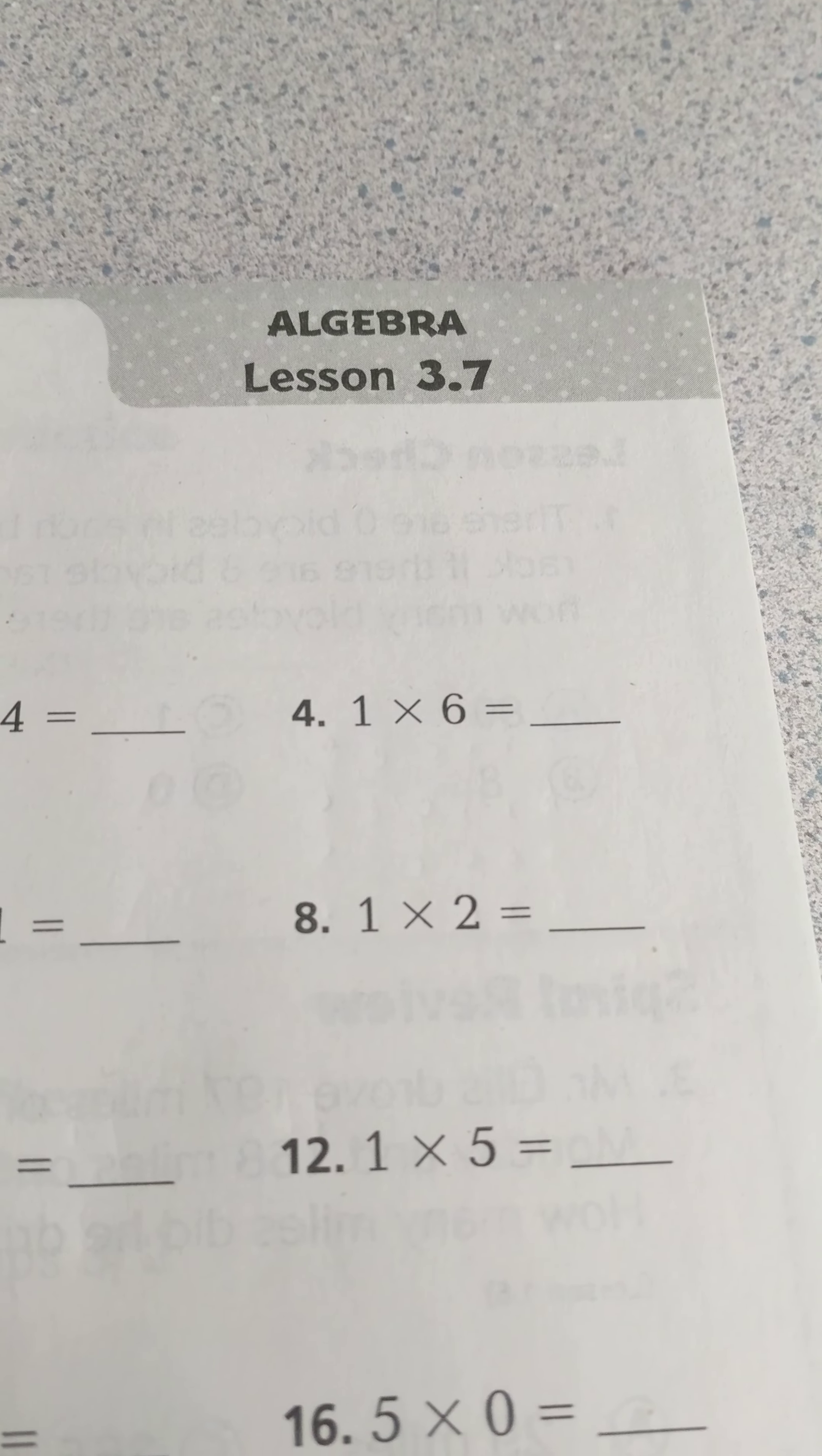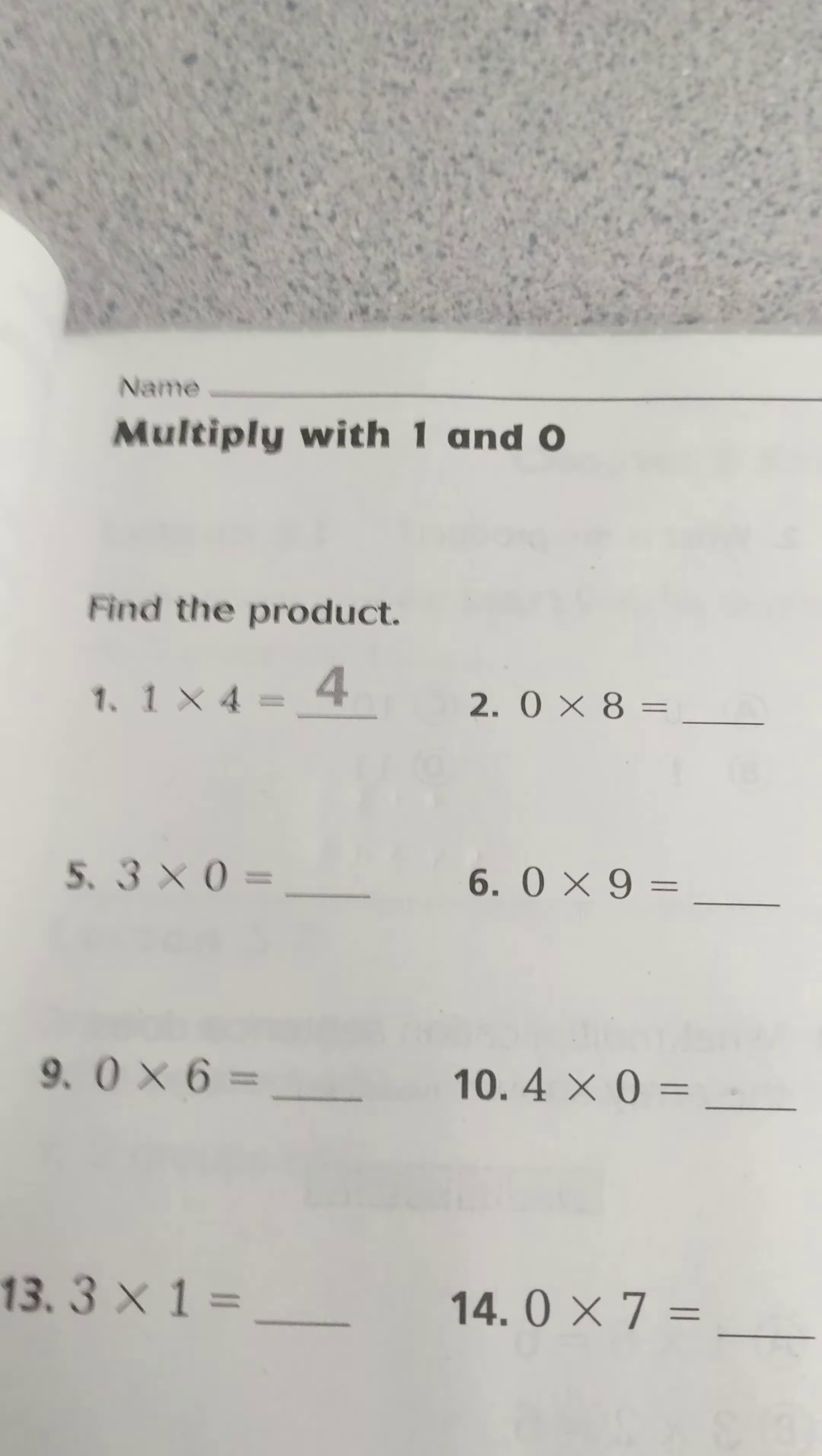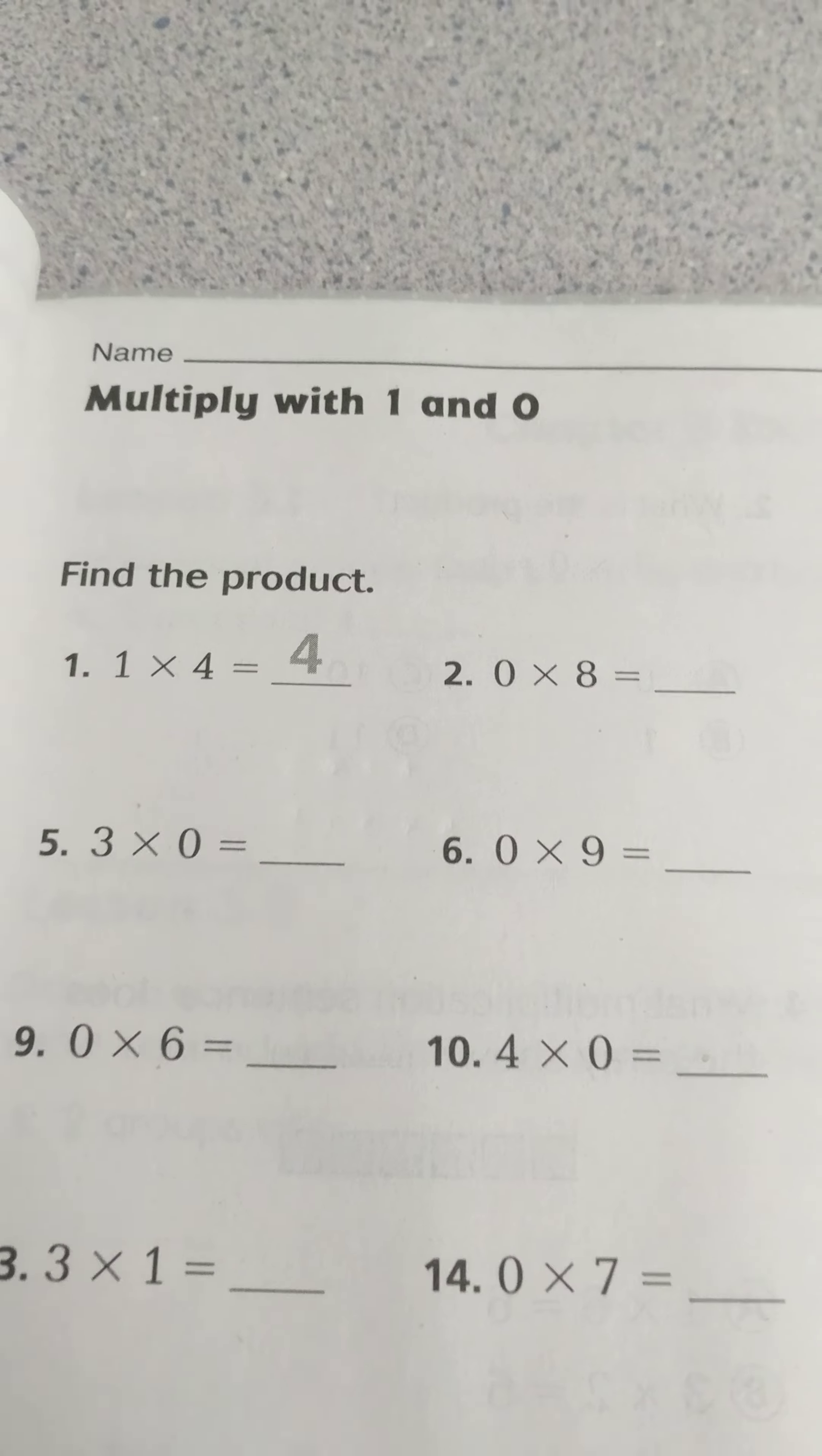This is third grade Go Math lesson 3.7, and today we're going to multiply with 1 and 0.